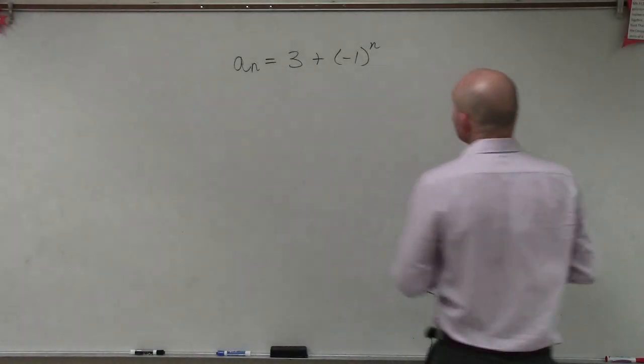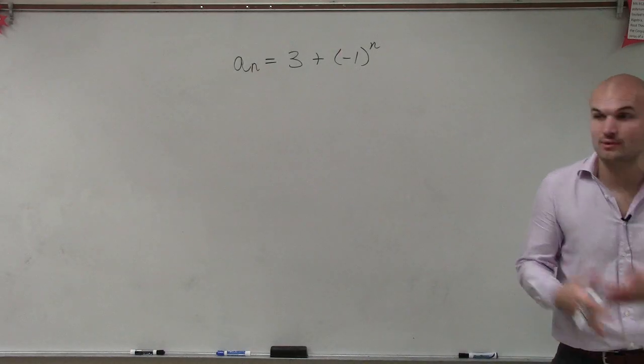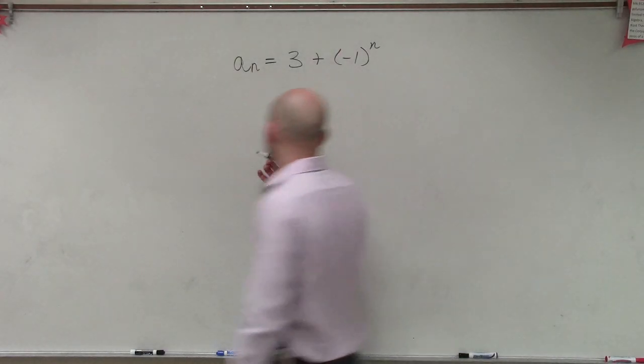So here we have a_n = 3 + (-1)^n, and they want us to define the first four terms.